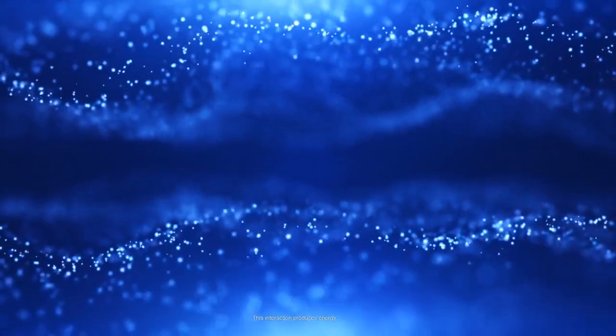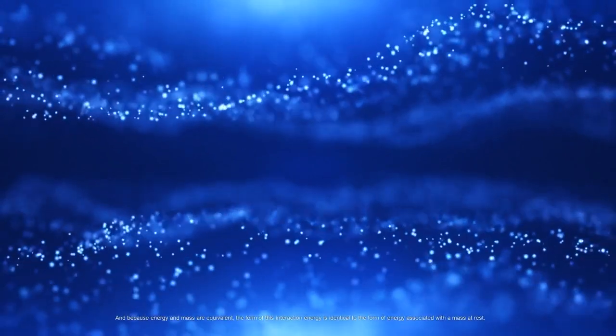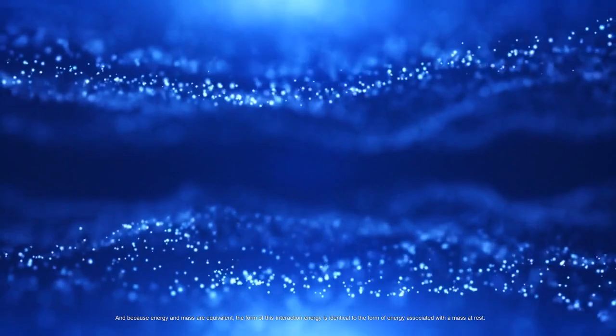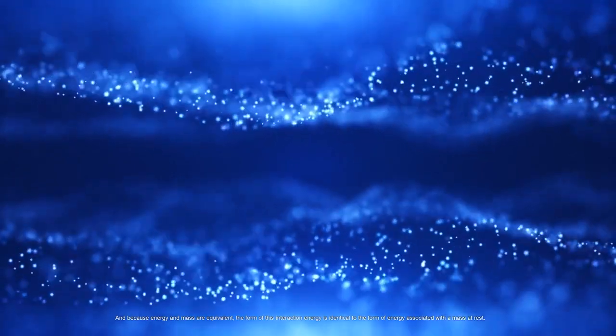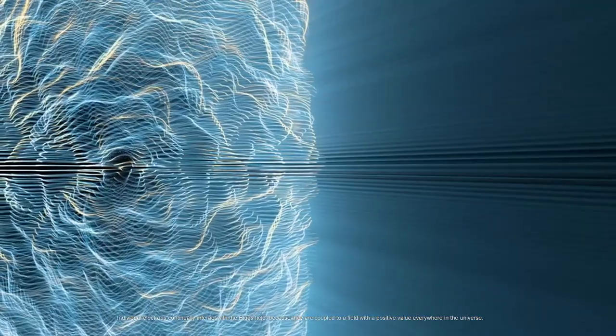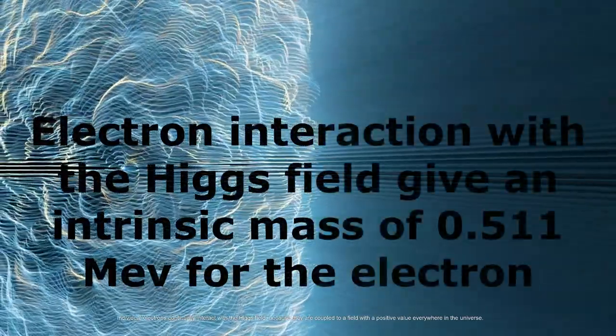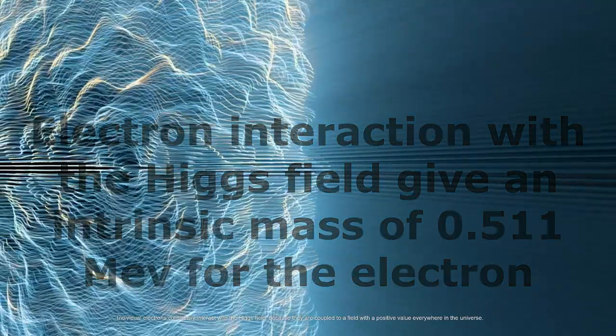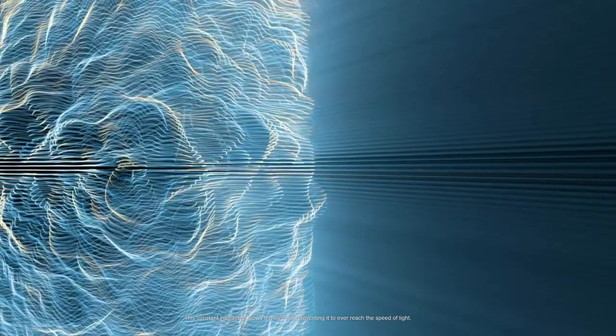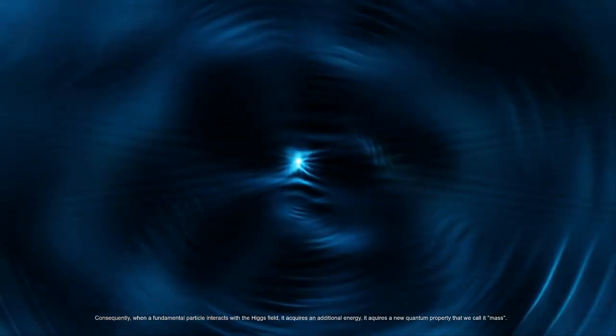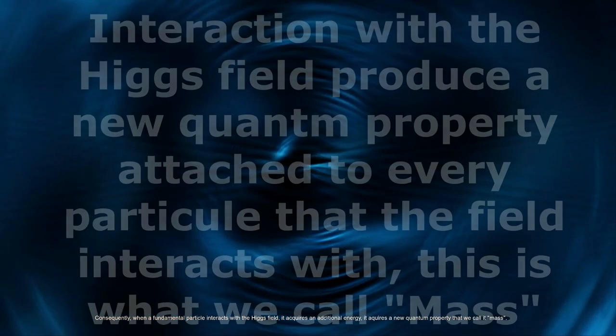This interaction produces energy, and because energy and mass are equivalent, the form of this interaction energy is identical to the form of energy associated with a mass at rest. Individual electrons continually interact with the Higgs field because they are coupled to a field with a positive value everywhere in the universe. This constant interaction slows the electron, preventing it from ever reaching the speed of light. Consequently, when a fundamental particle interacts with the Higgs field, it acquires an additional energy; it acquires a new quantum property that we call mass.